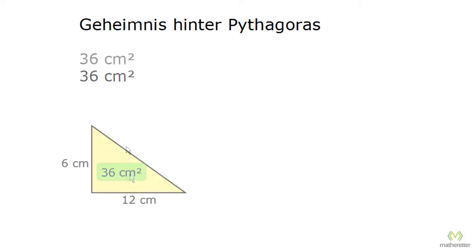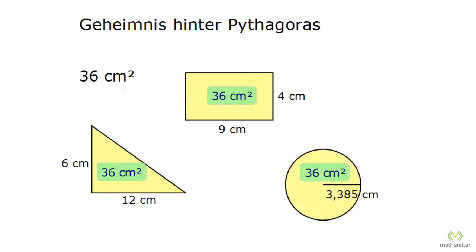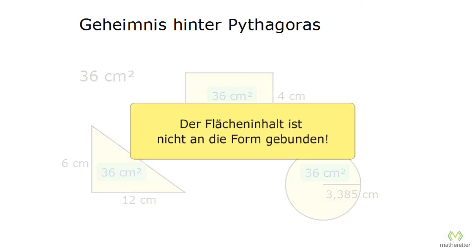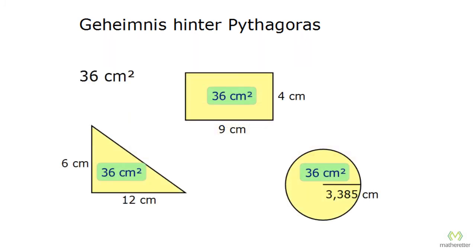An example would be a triangle, but the 36 square centimeters might just as well be a rectangle. We could also take a circle, and we could draw any geometrical figure so that it has an area of 36 square centimeters. So we notice a very important rule: the area is not bound to the shape. So we can transfer these 36 square centimeters into the rectangular area, the rectangular area into the circle, and the circle again into a triangular area.